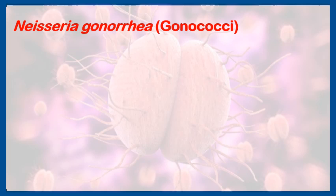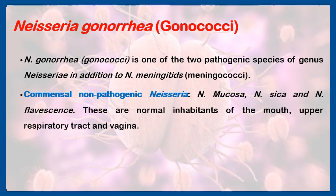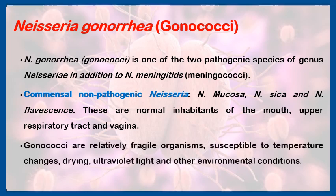The second important bacterium causing sexually transmitted infections is Neisseria gonorrhoeae. Neisseria gonorrhoeae is one of two types of Neisseria: one is Neisseria meningitidis causing meningitis, and the other is Neisseria gonorrhoeae causing gonorrhea. There are some commensal non-pathogenic Neisseria present in the vagina — not all Neisseria present are pathogenic. The gonococci are relatively fragile organisms, meaning they get destroyed by temperature, dryness, and ultraviolet light.